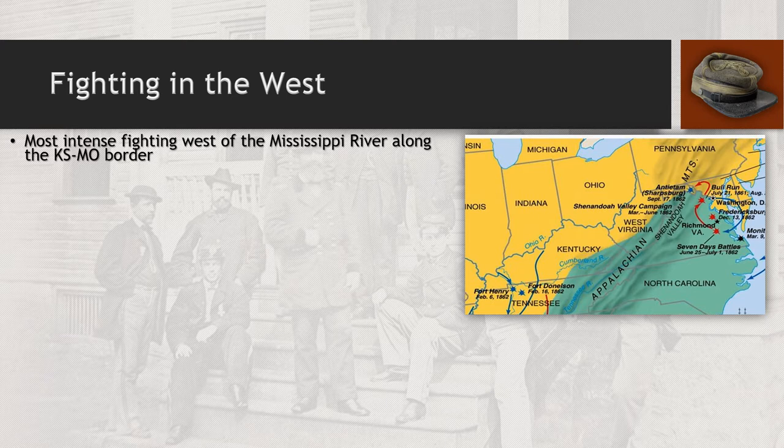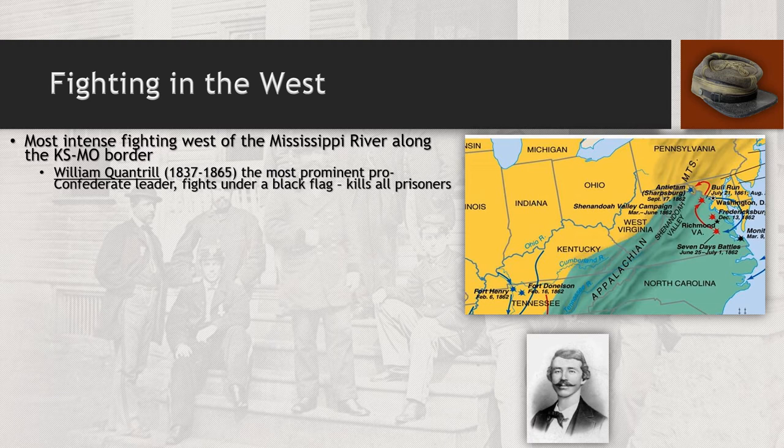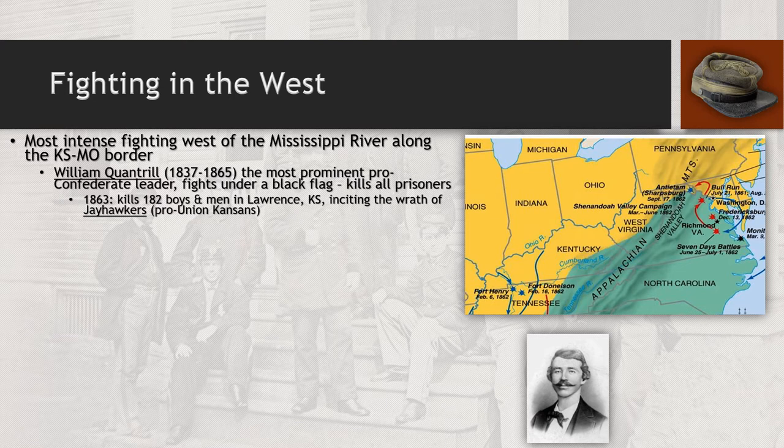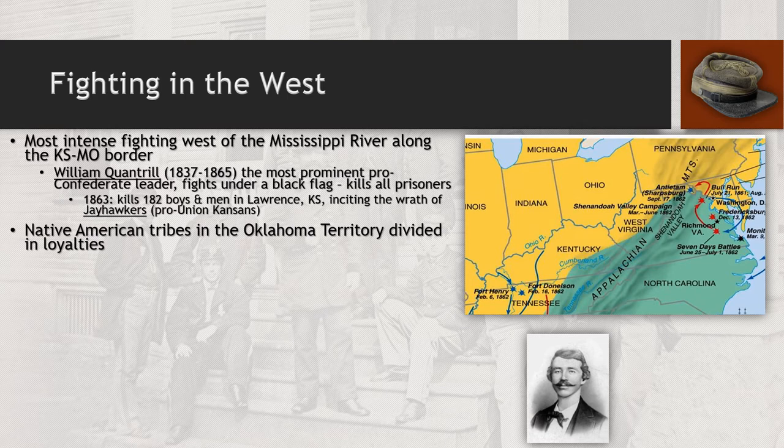In the western portion of the conflict, significant fighting occurs along the Kansas and Missouri border. William Quantrill becomes the most prominent pro-Confederate leader during this period, fighting under a black flag — meaning he takes no prisoners and kills all individuals attempting to surrender. In 1863, he goes into Lawrence, Kansas, and kills 182 males in the town. Those who are members of pro-Union contingencies in Kansas are known as Jayhawkers — which is where Kansas State University's mascot comes from.